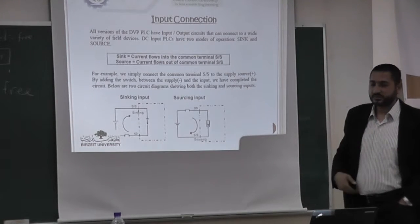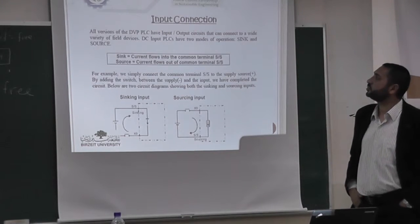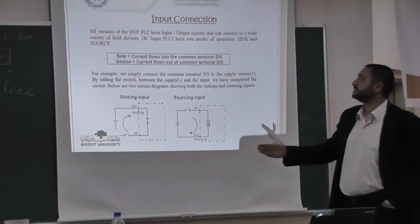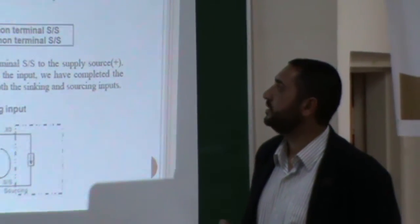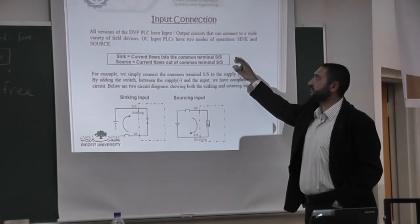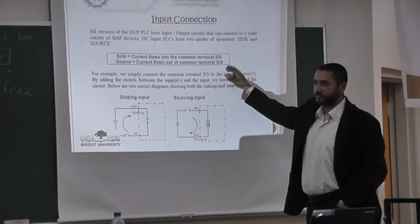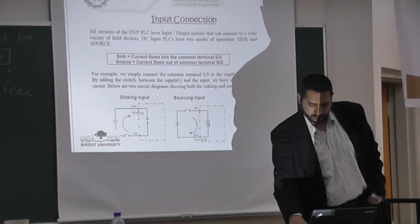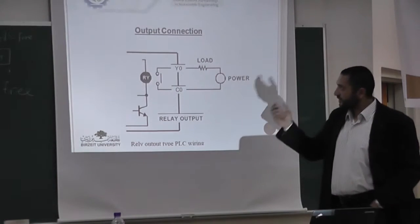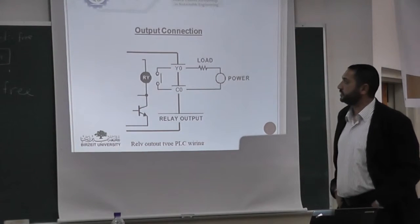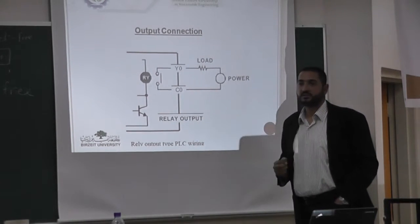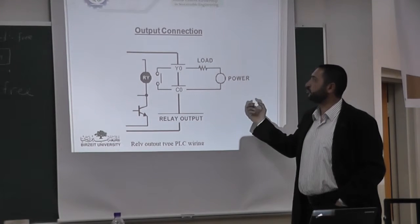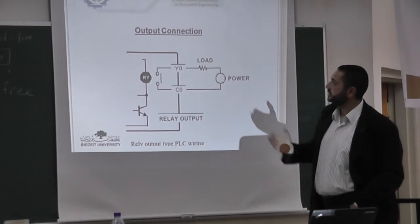We will talk about how to connect input to PLC. This is a method for connection to PLC. We have two methods to connect the input to PLC: we have a sink method and a source method. We will also talk about the output connection of PLC — how to connect the contactor to the PLC and how to connect the motor to the contactor with PLCs.